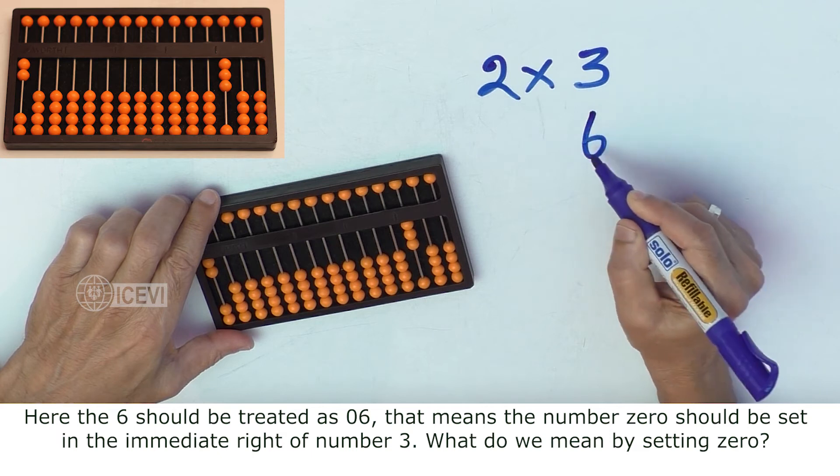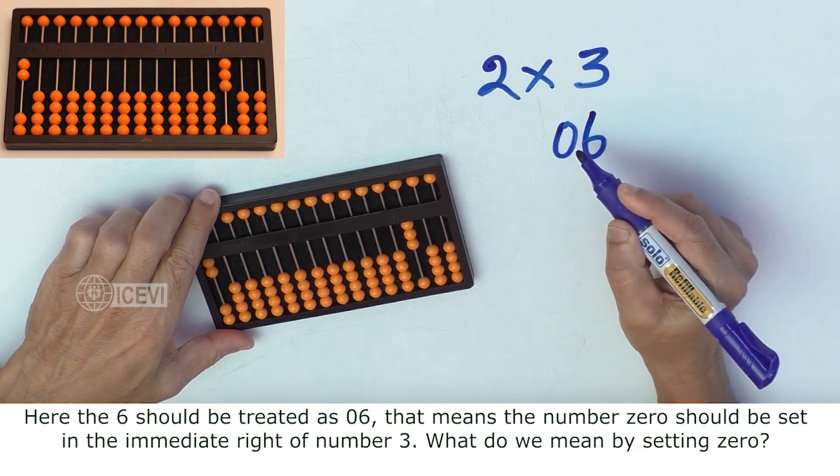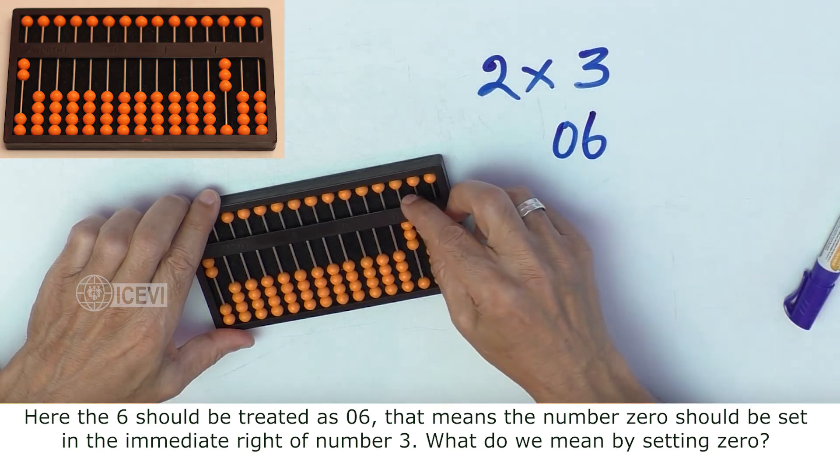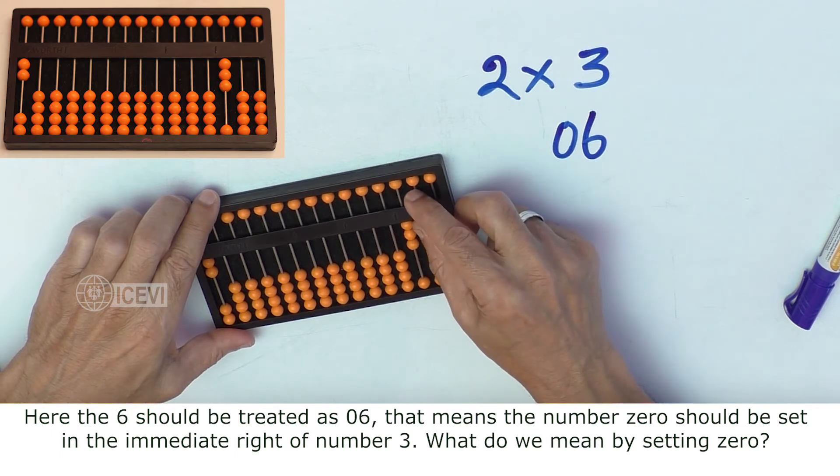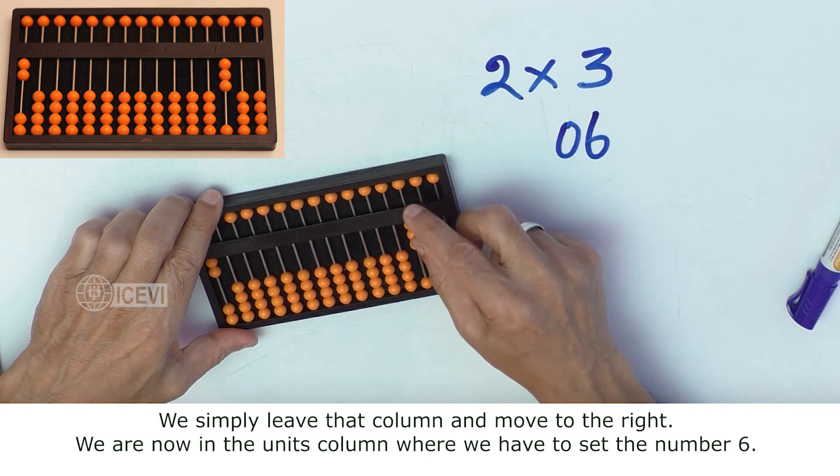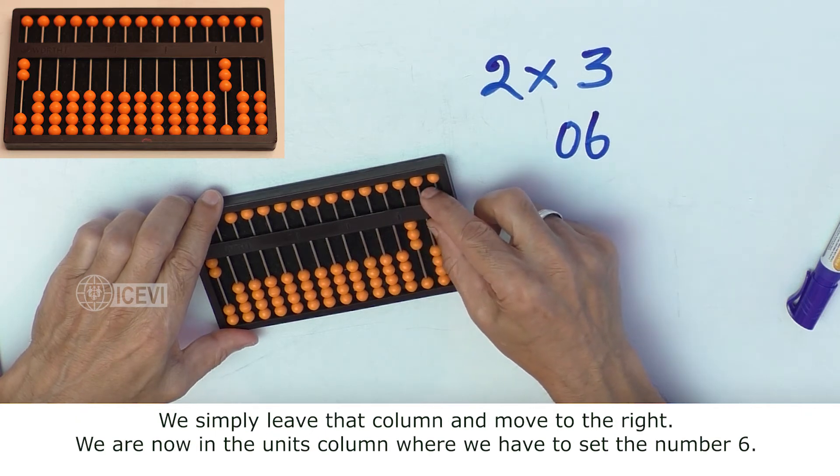So here, the 6 should be treated as 06, that means the number 0 should be set in the immediate right of the number 3. What do we mean by setting 0? We simply leave that column and move to the right.